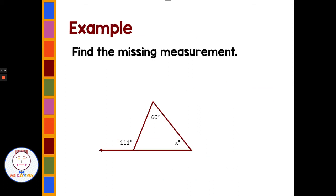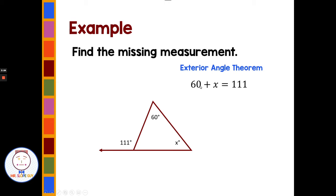What if we're asked to find the missing measure? We have a triangle with an exterior angle of 111. We can identify the two remote interior angles of 60 and x. So the relationship is 60 plus x would equal 111 by the exterior angle theorem. Subtract 60, and this angle must be 51 degrees.